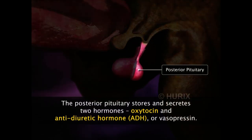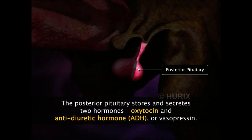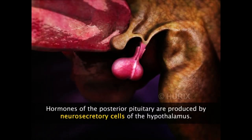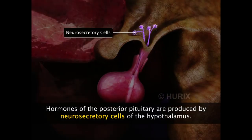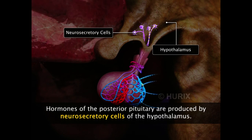The posterior pituitary stores and secretes two hormones: oxytocin and antidiuretic hormone, ADH, also called vasopressin. However, these hormones are not produced in the posterior pituitary. They are produced by the neurosecretory cells of the hypothalamus, which have axon terminals located in the posterior pituitary. These hormones, thus made by the cells of the hypothalamus, are stored and secreted by the posterior pituitary.